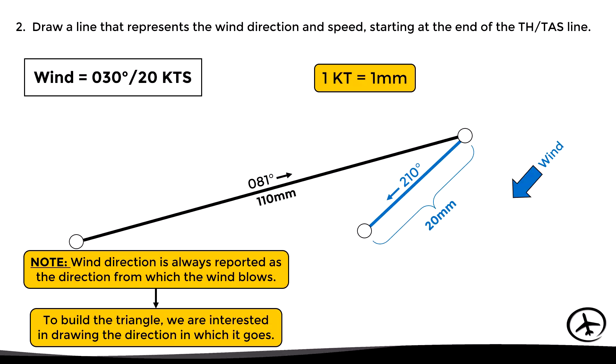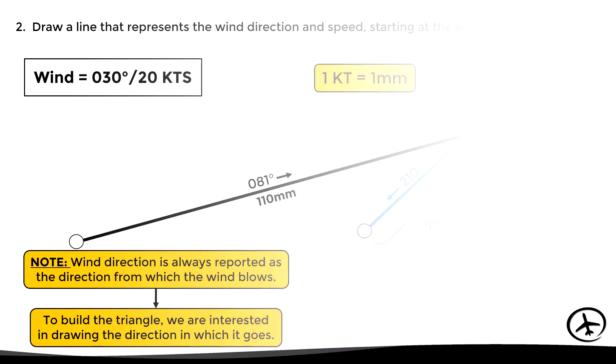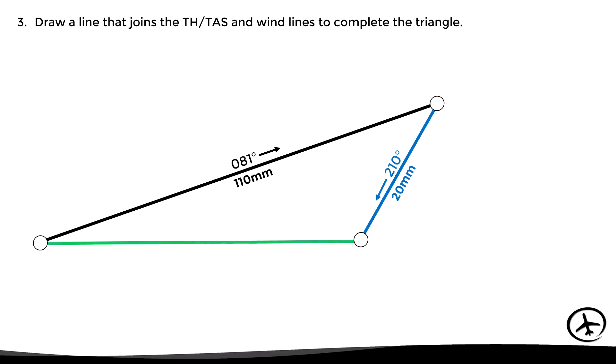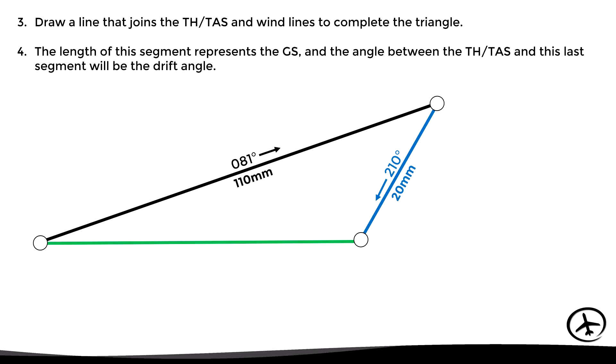So, using 030 as reference, we draw a line in the opposite direction with a length of 20 millimeters. Then the third step is to complete the triangle by drawing a straight line that joins these segments. The length of this last segment is equivalent to the expected ground speed, which in this case is 100 knots. The angle between this segment and the heading/true airspeed segment is the drift angle, which in this case is 9 degrees, giving an actual track of 090.